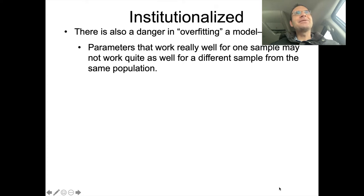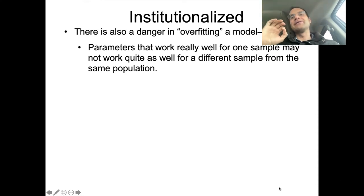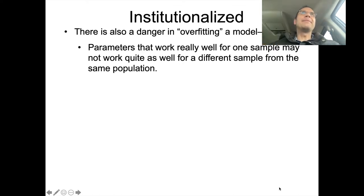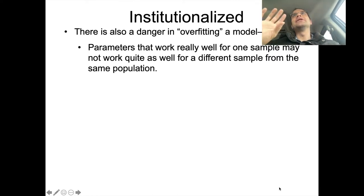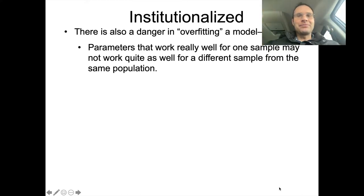There is a danger in coming up with particular factors which exactly predict the value of whatever data you get in your dataset. It's called overfitting, and this is not just applicable to analyzing experimental data — it's also a principle in building computer programs trying to figure out what underlying principles generate a set of data.